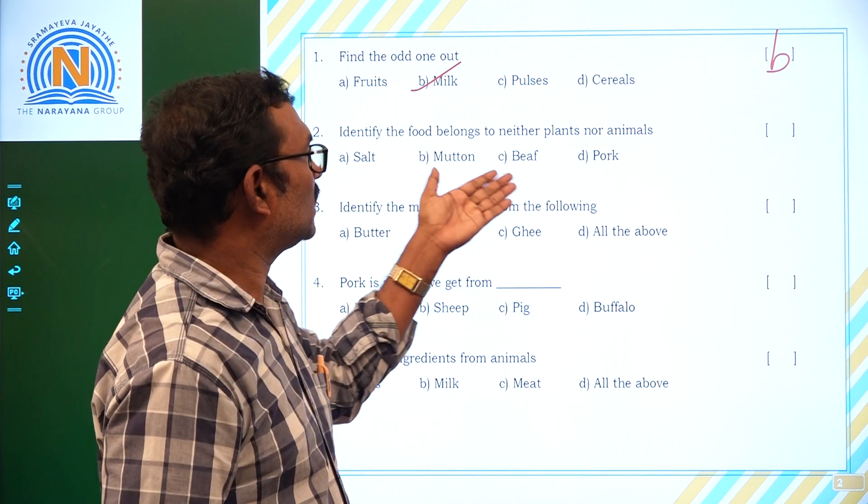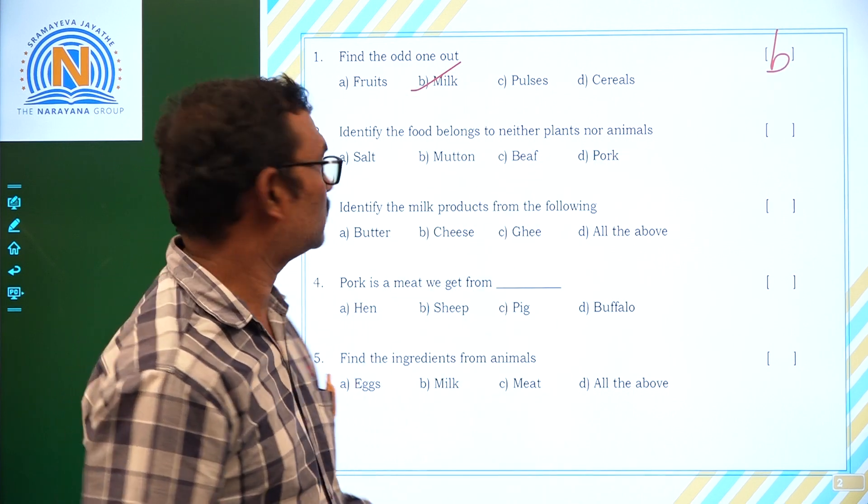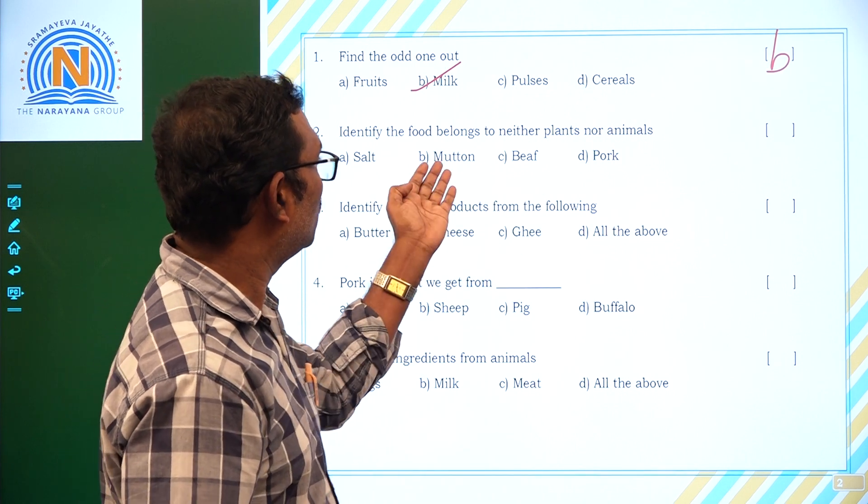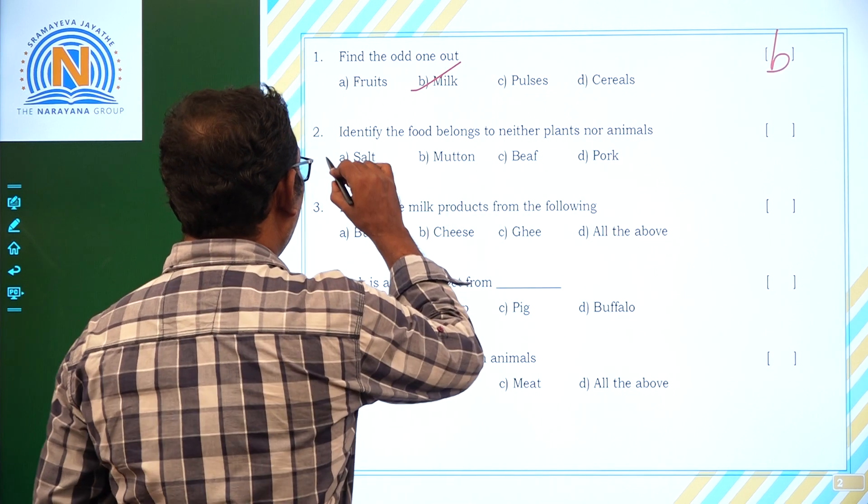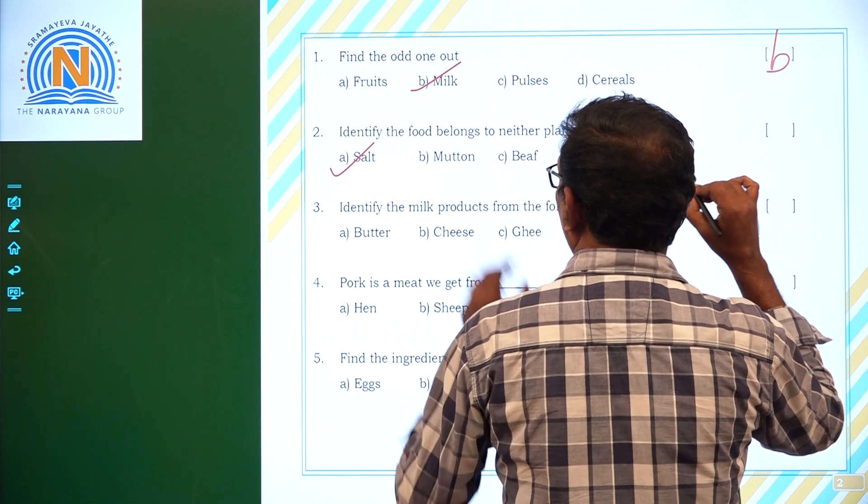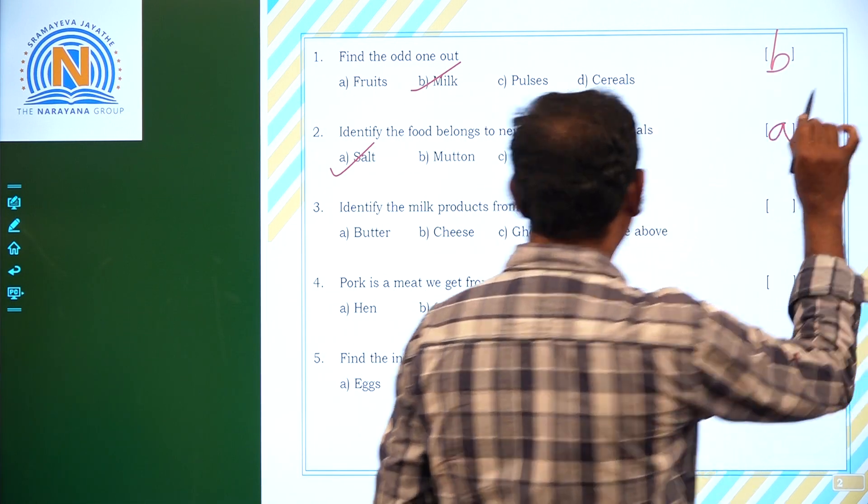Identify the food belongs to neither plants nor animals. Which one? Salt, mutton, beef, pork. These are all animal foods, but A is neither from plant or animal. Salt, A.